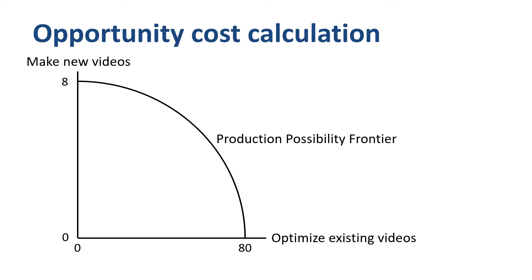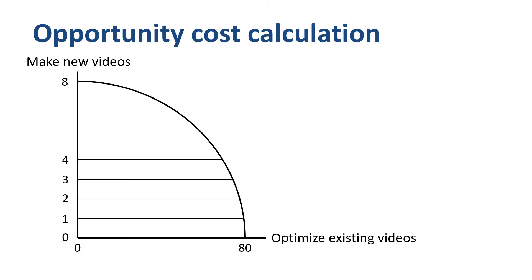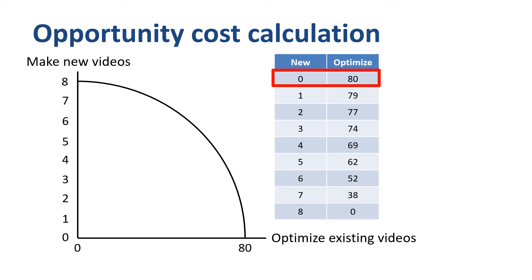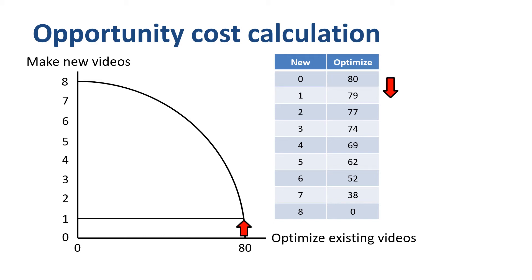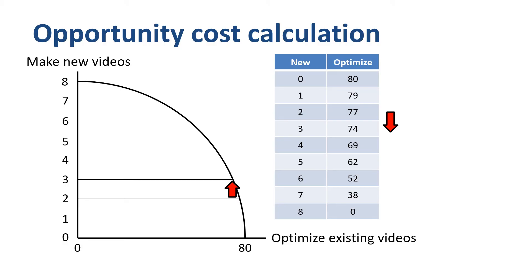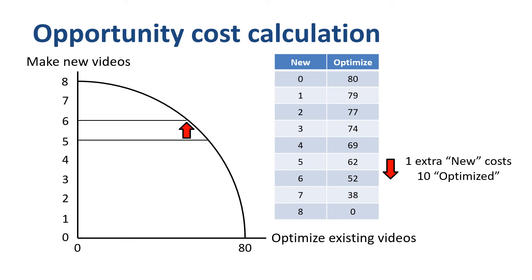Let's collect some data points. We need to figure out how many existing videos can be optimized when making one new video, 2 new videos, 3 new videos, etc. This results in a table with 9 combinations. Opportunity cost is simply the trade-off between the two activities. If you make 0 new videos, you can optimize 80 existing videos. If you go from 0 to 1 new video, you have to give up only 1 optimized video — the opportunity cost is 1 optimized existing video. If you go from 1 to 2 new videos, you have to give up 2 optimized videos. It gets incrementally harder to make new videos — you will have to give up more and more optimized existing videos.